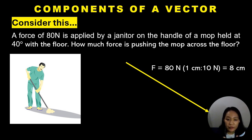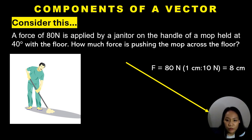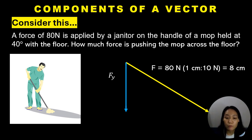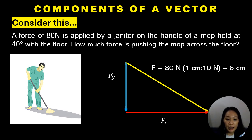Using the graphical method, you will use a scale. For uniformity, let's say the scale is 1 centimeter equals 10 newtons. Since the given value is 80 newtons, we will use 8 centimeters as the length of the main vector. Drawing that on your paper, you can draw a vertical arrow giving the vertical component f sub y, and a horizontal component f sub x.